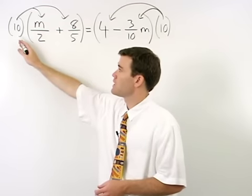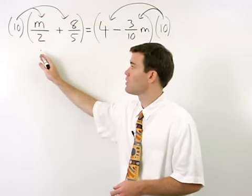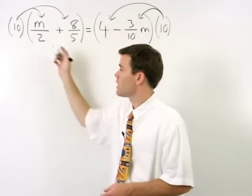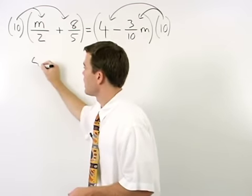When we multiply 10 times m over 2, the 10 and 2 reduce to 5 and 1, so we have 5 times m, which is 5m.